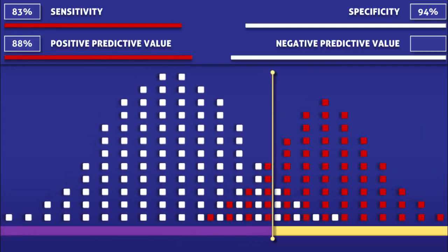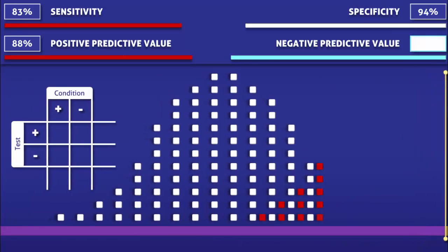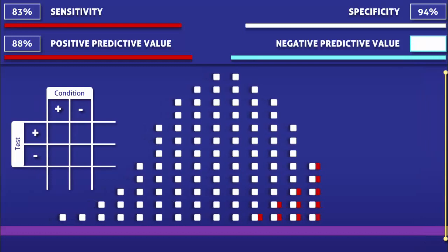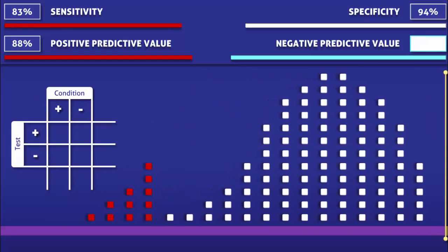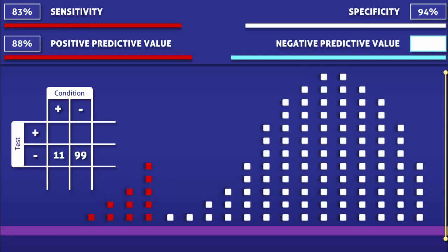And now let's move on to the negative predictive value. Since the negative predictive value only takes into consideration people who tested negative, we are going to focus on the squares to the left of the cutoff level. Counting the squares, we find that 11 negative tests were false and 99 negative tests were true. Since the negative predictive value is the proportion of negative tests that are correct, we calculate it by dividing 99 by 110, giving us a negative predictive value of 90%.